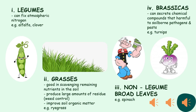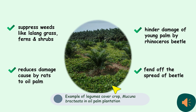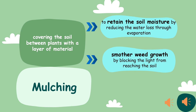Cover crops are usually annual crops that can establish quickly to outcompete weed growth. Cover crops are planted between rotations of a cash crop or at the same time as the cash crop. Some benefits of legume cover crop Mucuna bracteata in oil palm plantations are: suppressed weeds, reduced damage by rats, and hindering damage and spreading of rhinoceros beetles.